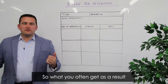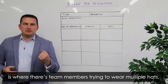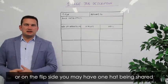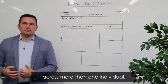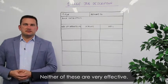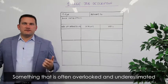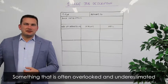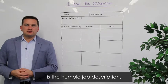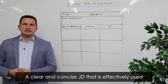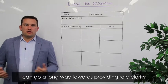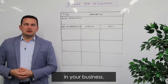What you often get as a result is team members trying to wear multiple hats, or on the flip side, you may have one hat being shared across more than one individual, and neither of these are very effective. Something that is often overlooked and perhaps underestimated is the humble job description, because a clear and concise JD that is effectively used can go a long way towards providing role clarity within your business.